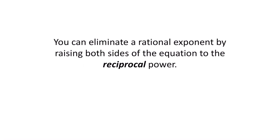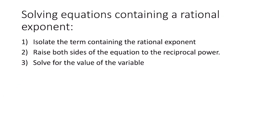Remember, you can eliminate a rational exponent in an equation by raising both sides of the equation to the reciprocal power. The reciprocal of a fraction is when you take that fraction and flip the numerator and denominator. So the reciprocal of 2 fifths will be 5 over 2. To solve an equation with a rational exponent, start off by isolating the term containing the rational exponent, then raise both sides to the reciprocal power, and then solve for the value of the variable.